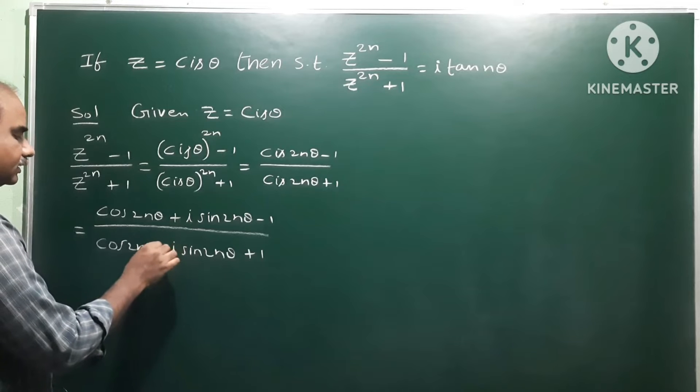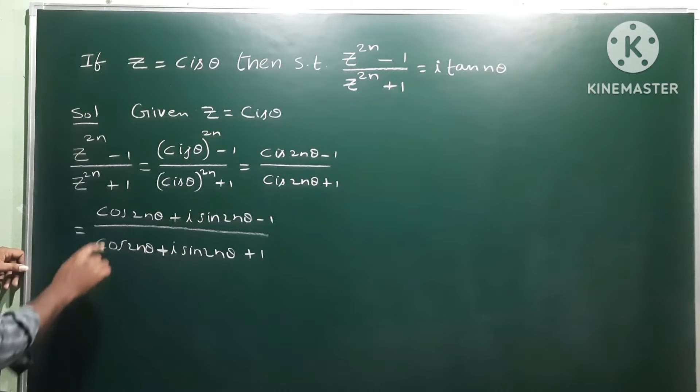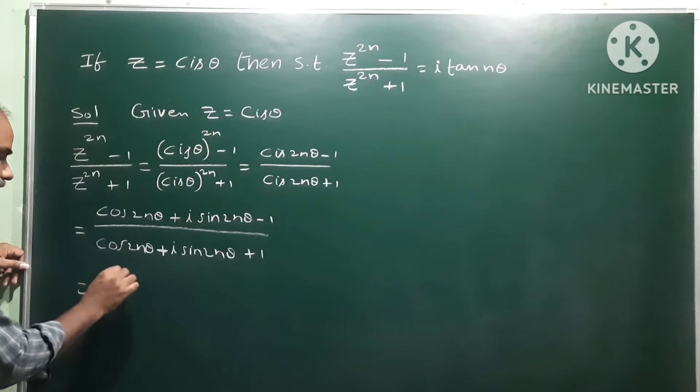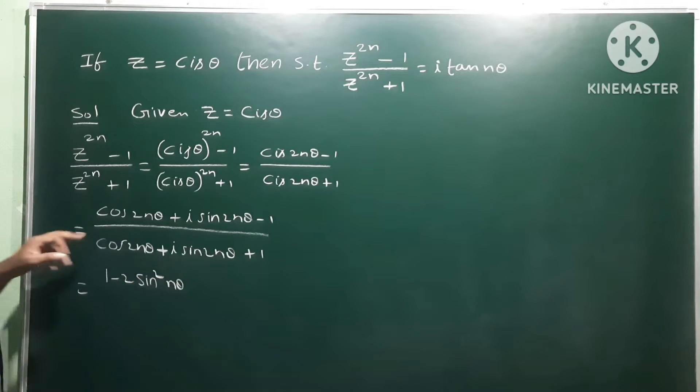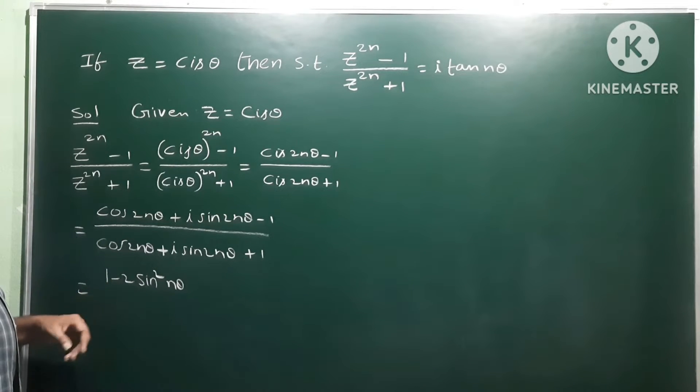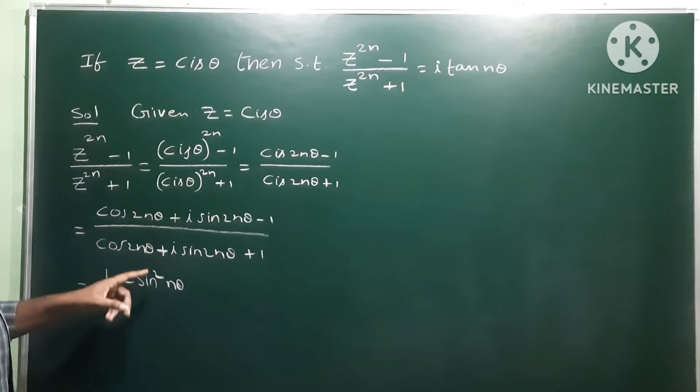cos 2nθ plus cos 2nθ minus 2 sin... So cos 2nθ formula: 1 minus 2sin²nθ.